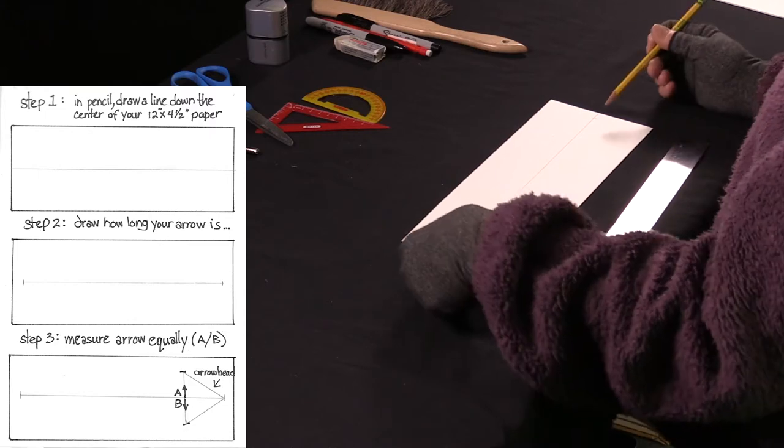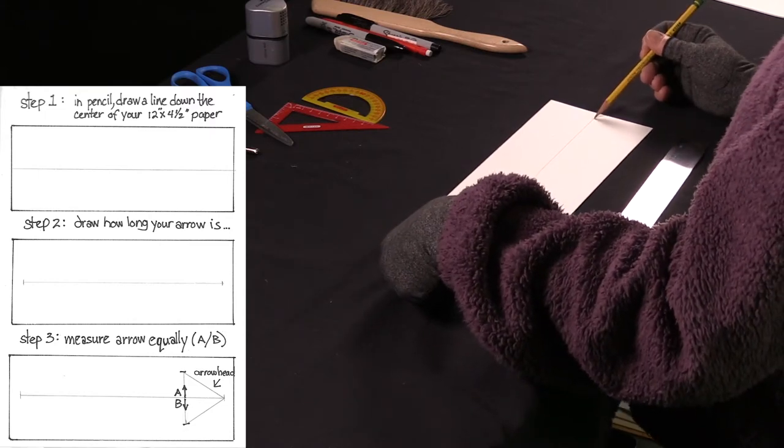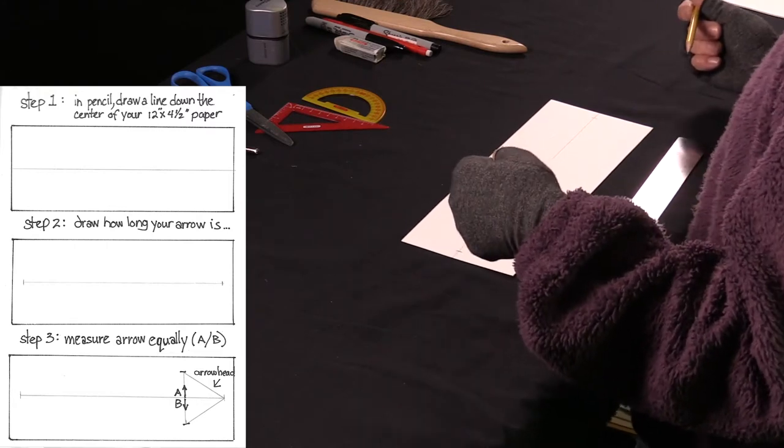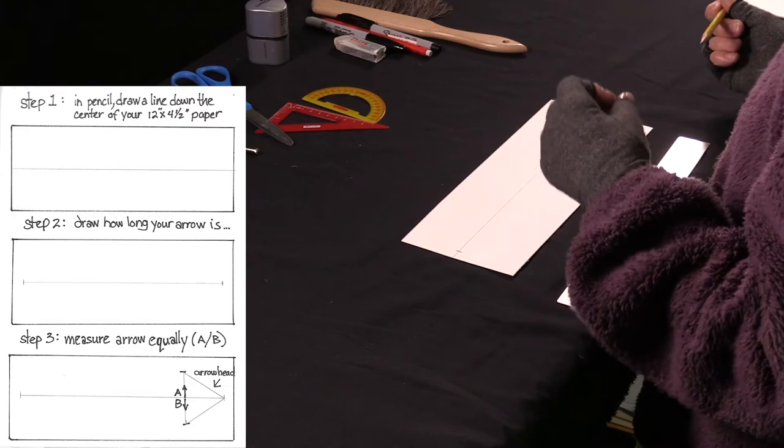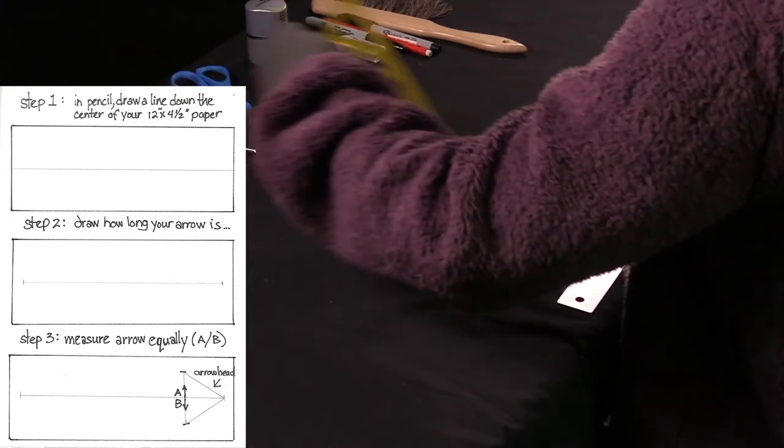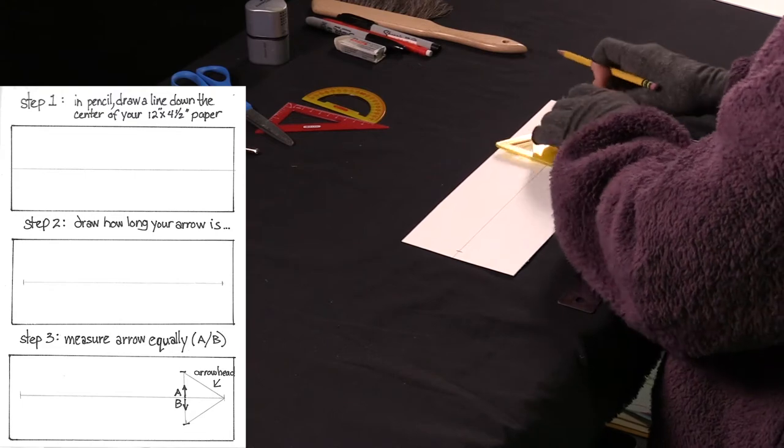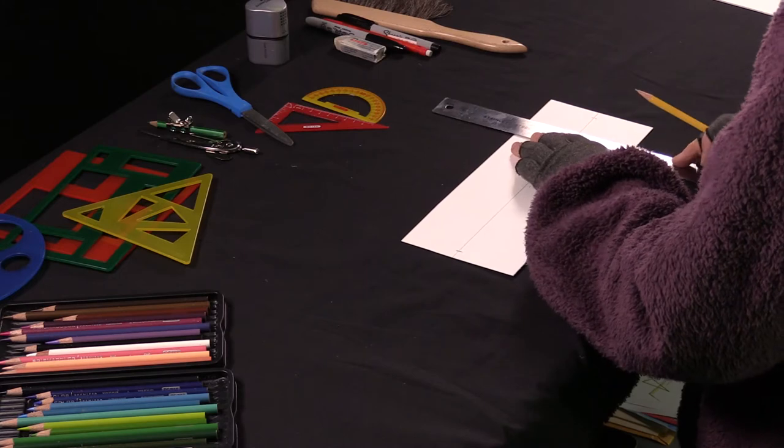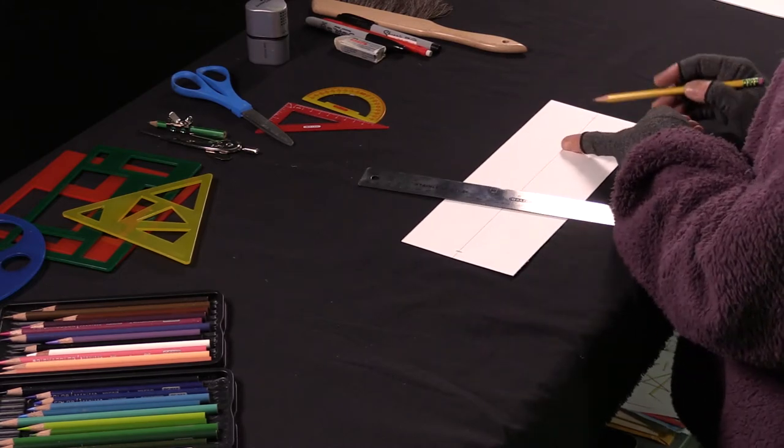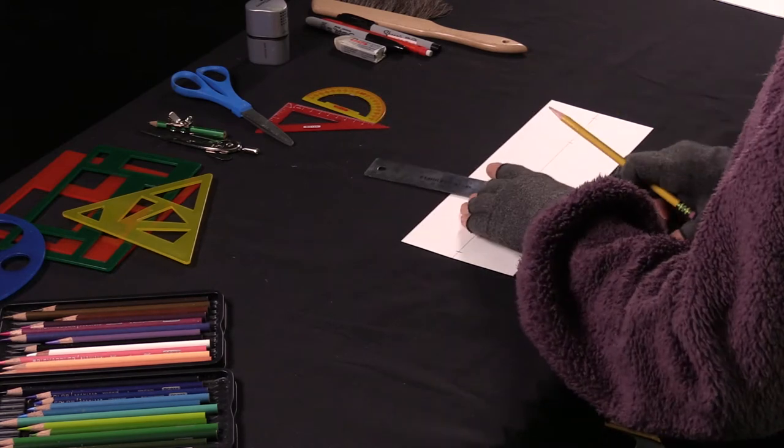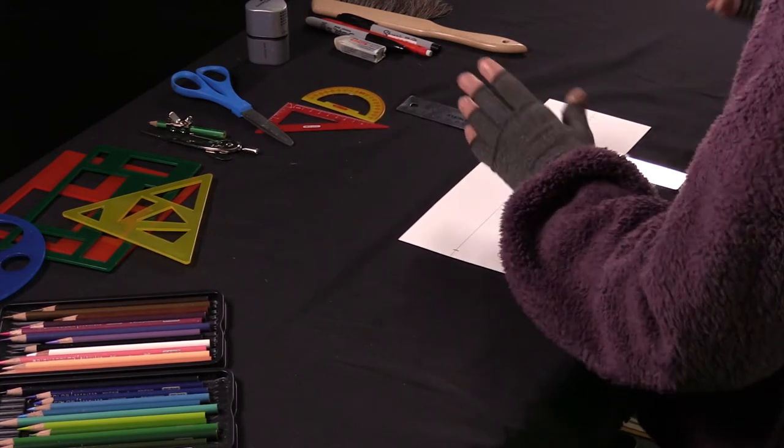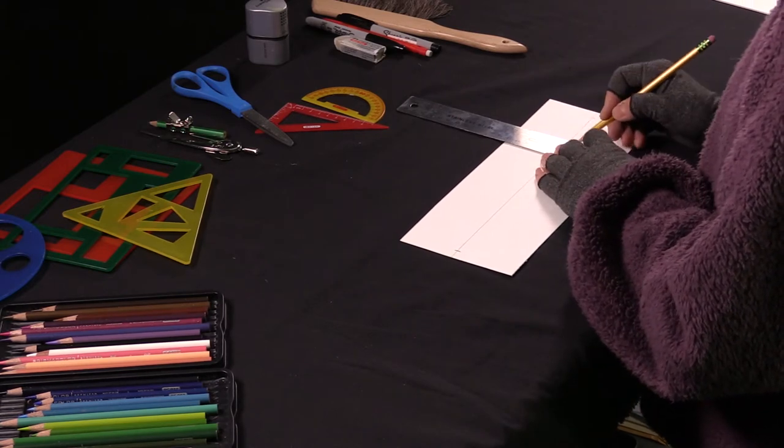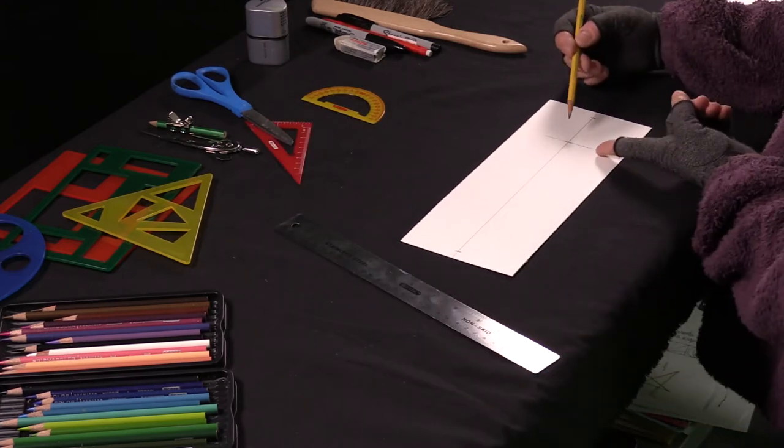So step one is to draw a line down the center of your paper. Step two is to mark how long you want your arrow. And step three is to put in your triangle, your arrowhead. Now I could, it wouldn't be really fair if I just used this triangle from my stencil, so I'm not going to. I'm going to show you how to do an equal triangle. I'm saying, okay, I want my arrowhead this long, so I put a little mark there. That's how long I want it. Now, I'm going to measure. I'm going to say that I want it one inch this way and one inch this way. So now, I've got it equal.